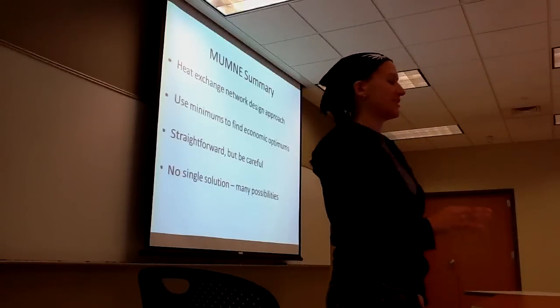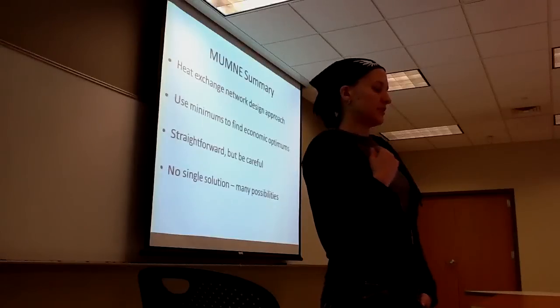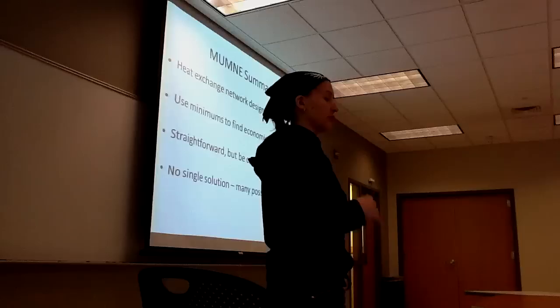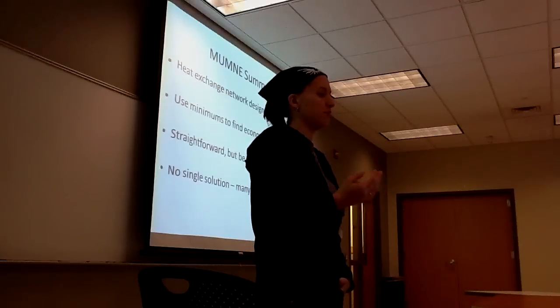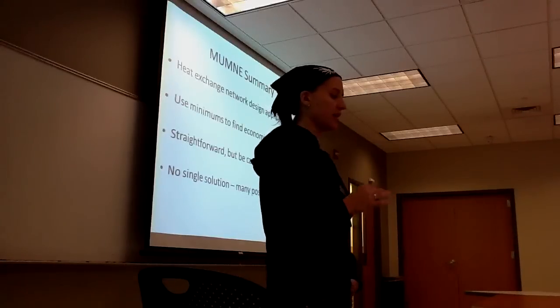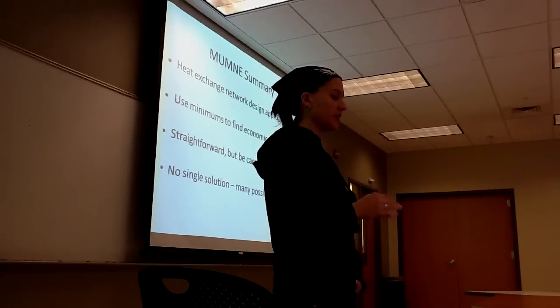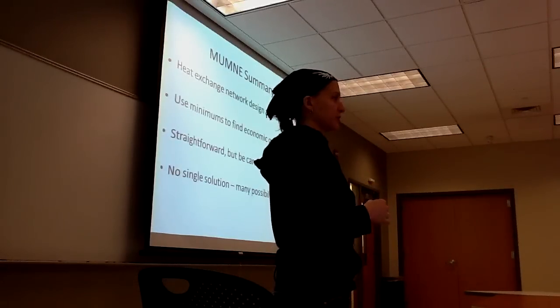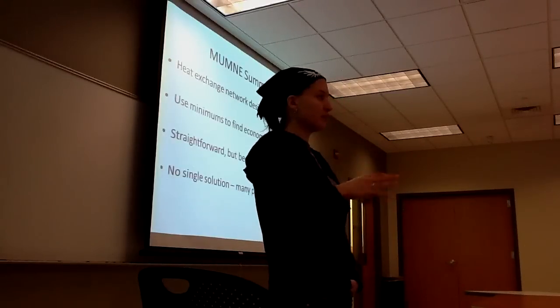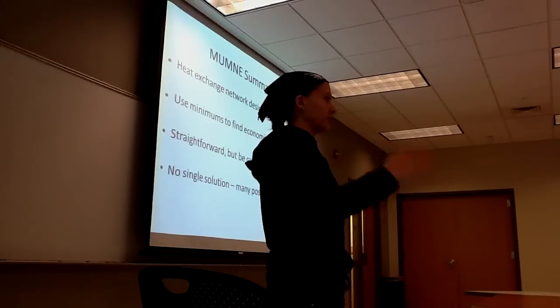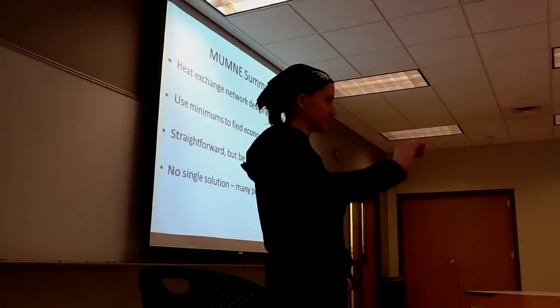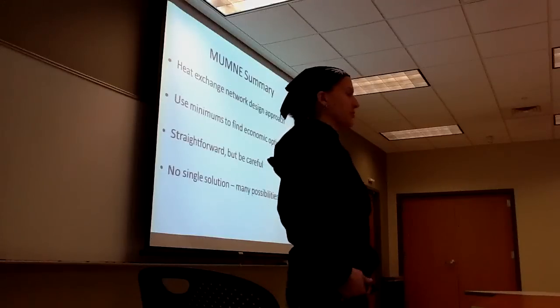In summary, you use heat exchange networks to approach designing around a pinch. Use minimum number of utilities to find the economic outcomes. It may not necessarily be the economic optimum when you first do it, but it gives you a good starting point. The money method is straightforward when you're following all the steps in the book. It makes a lot more sense when you can actually write stuff down and do your own calculations.